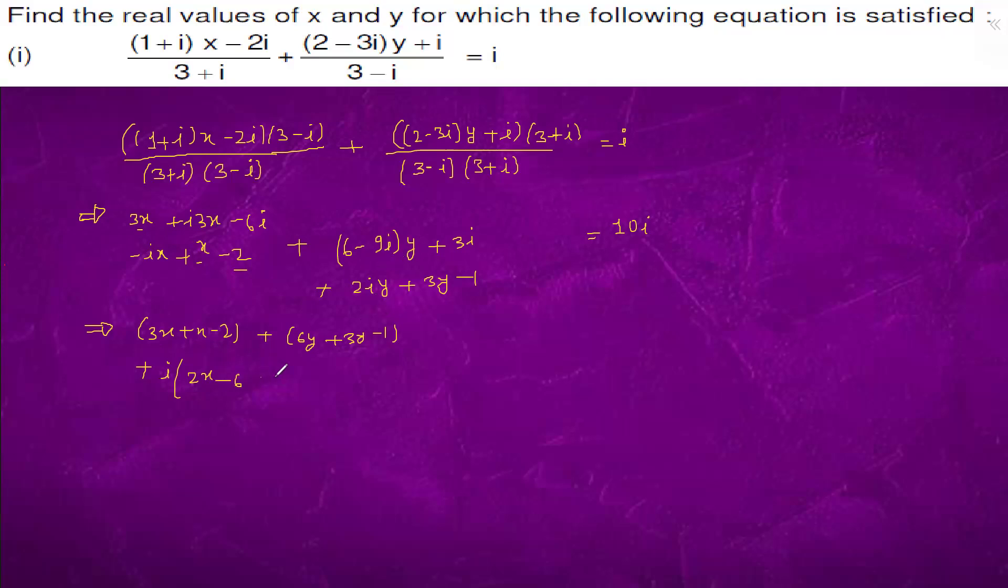And here we have minus 9 iota y plus 3. So we have minus 9y iota plus 2y plus 3, which is equal to 10 iota.